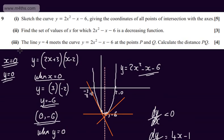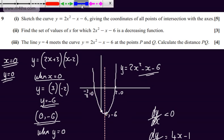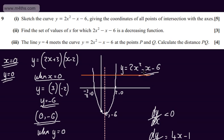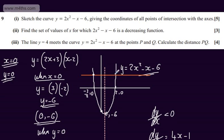In the third part, for 4 marks, we're told the line y equals 4 meets the curve y equals 2x squared minus x minus 6 at the points P and Q, and we're asked to calculate the distance PQ. Essentially what we're doing here is solving a simultaneous equation. This is the line y equals 4, and we want to find these two points of intersection.